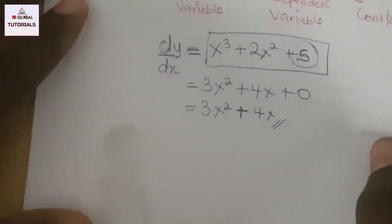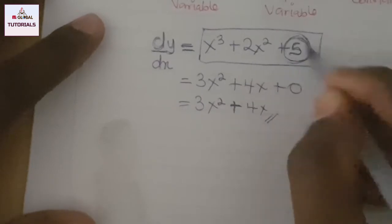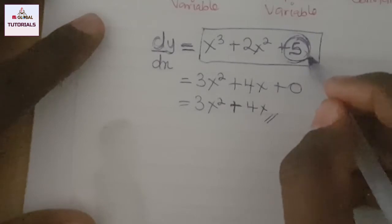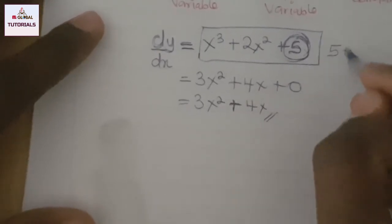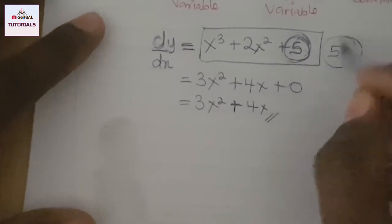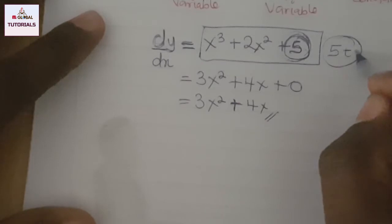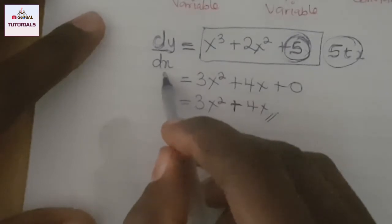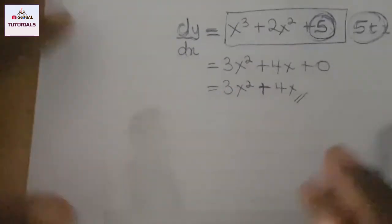Sometimes you differentiate with respect to x, and sometimes with respect to y. I said 5 is a constant because it's not attached to the independent variable. Even if it were 5t, it's still a constant because t is not the variable we are differentiating with respect to. A variable is only differentiated if it is attached to the independent variable.